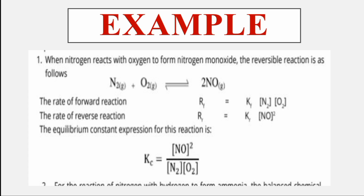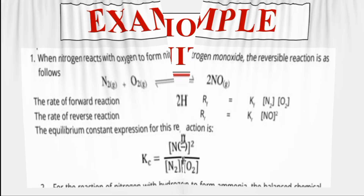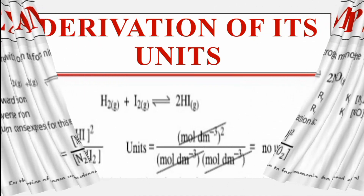Equilibrium constant کو Kc سے represent کرتے ہیں۔ اوپر product کی concentration ہوگی یعنی NO، اس پر coefficient 2 raise کریں۔ نیچے reactants N2 اور O2 کی concentrations کا product لیں۔ Concentration کو square bracket [ ] سے represent کیا جاتا ہے — یہ ہم نے پچھلے lecture میں پڑھا تھا۔